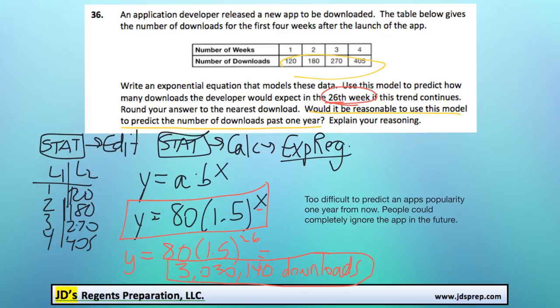So you might say something along the lines of what I typed up here, that it'd be too difficult to predict an app's popularity one year from now. And people could completely ignore the app in the future. There's no way of knowing for sure.